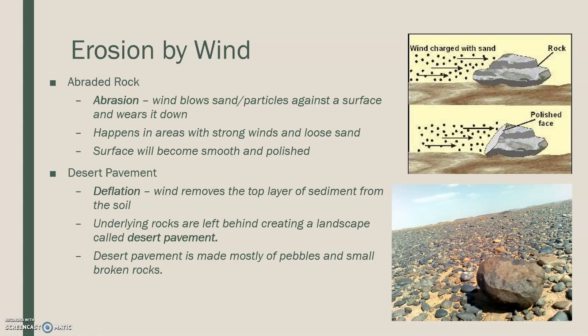Desert pavement is made mostly of small pebbles or small broken up pieces of rock. Some rocks, like the one in the foreground, are a little bit bigger, but often, if you notice, they just appear to be smooth and flat across the board.